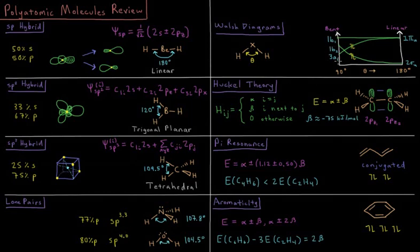We can represent how these different orbitals change their energy versus some type of internal intramolecular parameter like a bond angle in Walsh diagrams, where we explain that beryllium H2 is linear and water is bent.